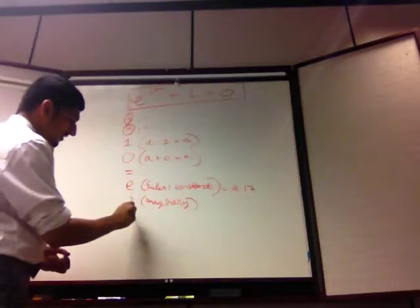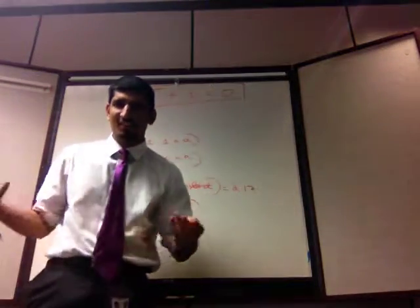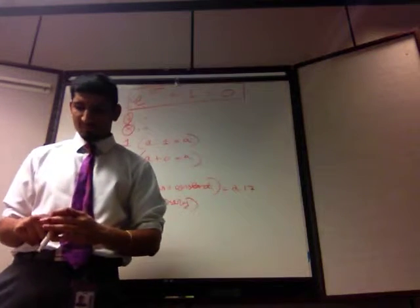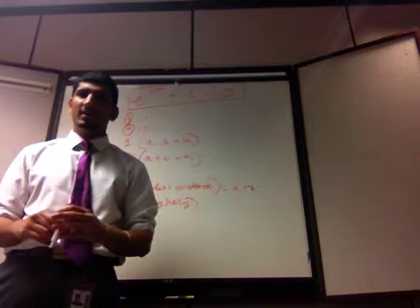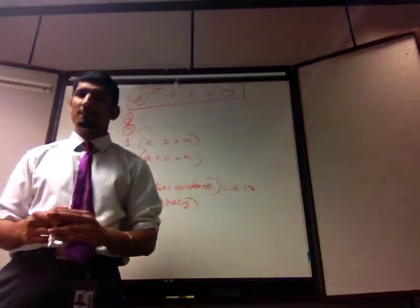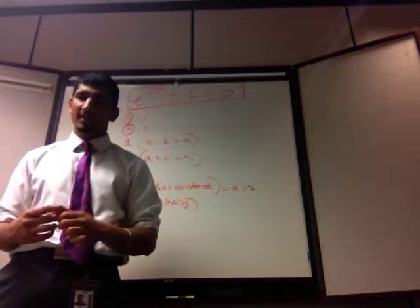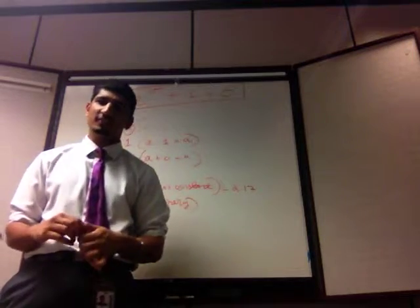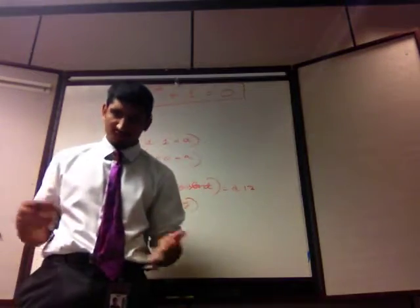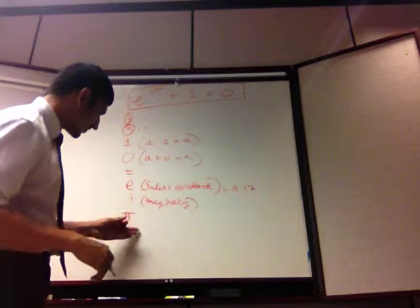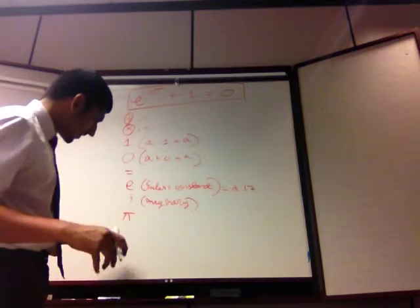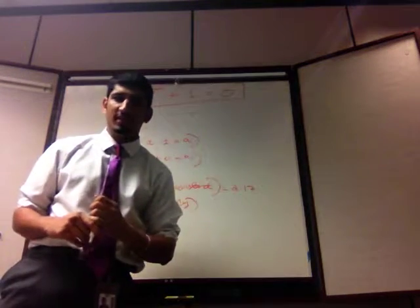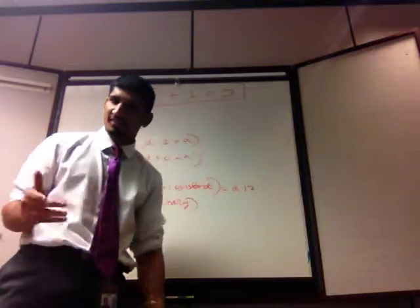And finally, pi, which we see all the time, which comes from a circle. Circumference is 2 pi r, so circumference divided by 2r, or circumference by the diameter, is a constant for a circle, which is pi. And this shows up all the time in trigonometry, everywhere, whatever math you do in number theory, differential geometry, it just comes up everywhere.